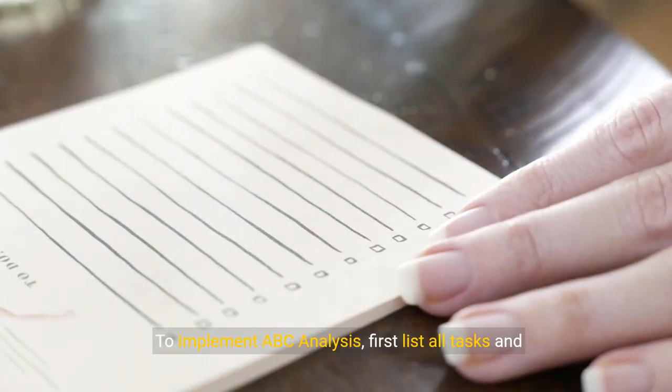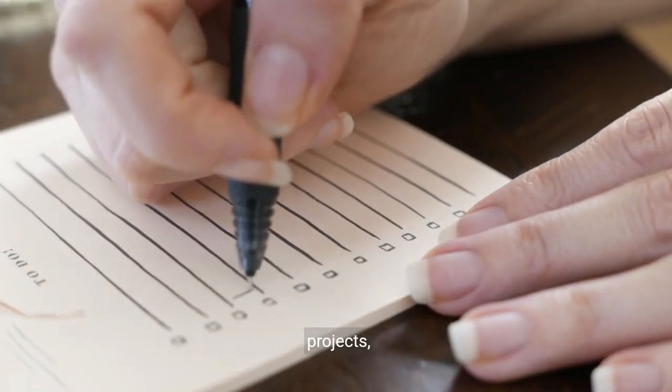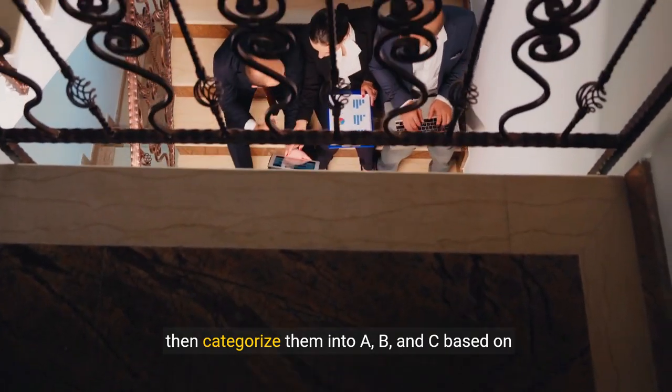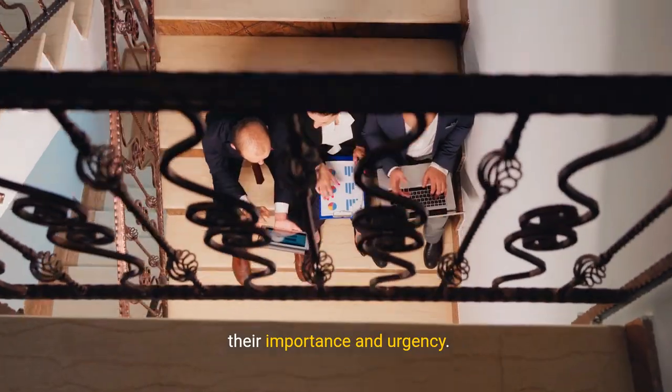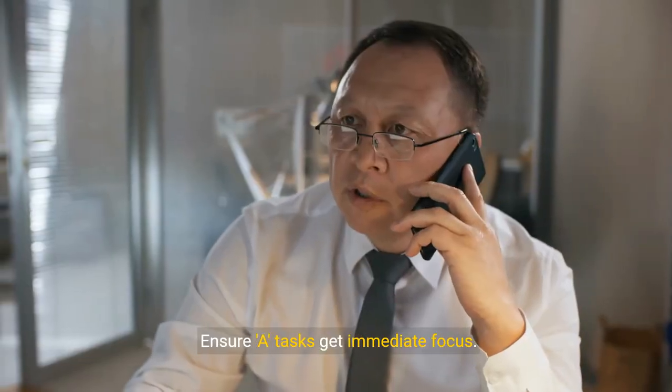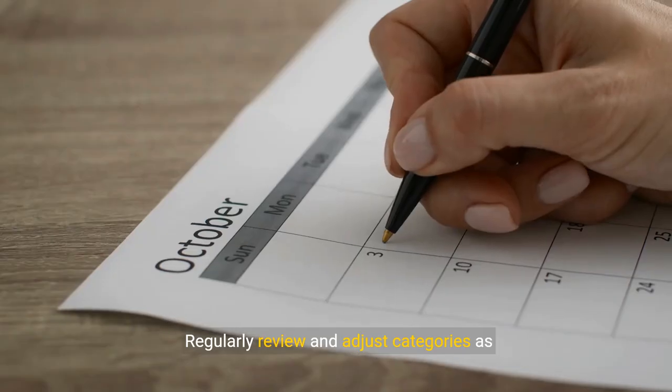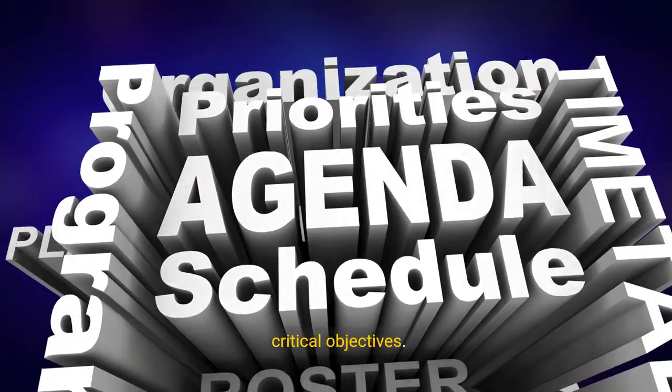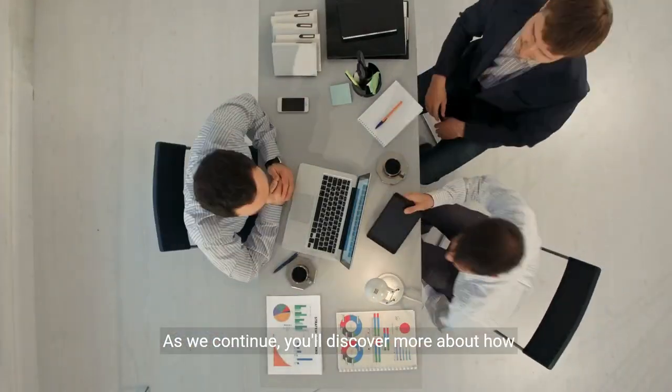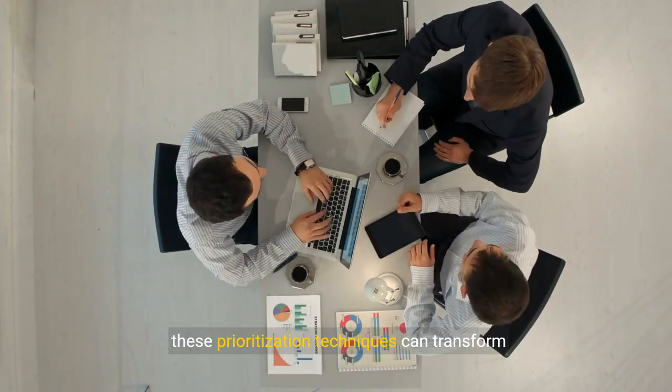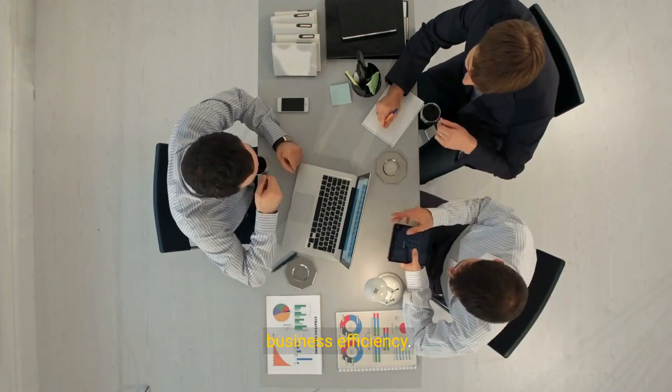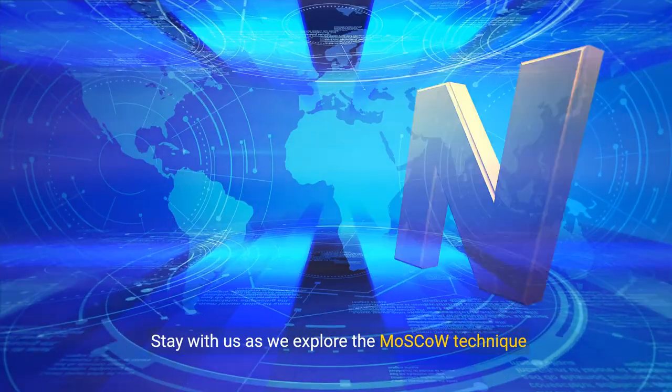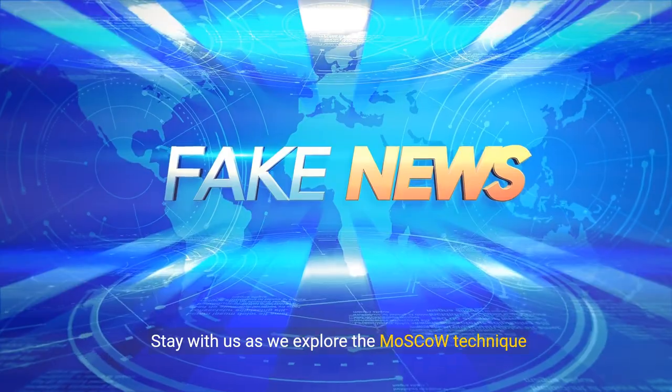To implement ABC analysis, first list all tasks and projects, then categorize them into A, B, and C based on their importance and urgency. Ensure A tasks get immediate focus. Regularly review and adjust categories as priorities shift over time. This dynamic approach keeps your focus aligned with critical objectives. Stay with us as we explore the Moscow technique next.